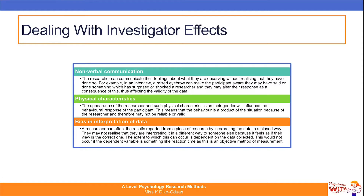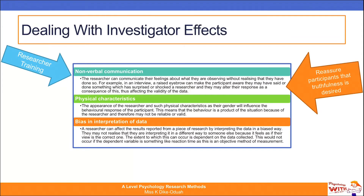So how do we deal with investigator effects? The first approach is researcher training. If you know your body language can affect participants' behavioural responses, it's important that investigators are trained to behave in a way that minimises their impact on participants. It's also important that researchers try their best to reassure participants that truthfulness is desired, no matter how odd they may feel about being genuine — that reassurance can go a long way in ensuring the internal validity of the study.